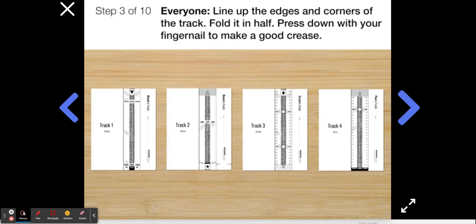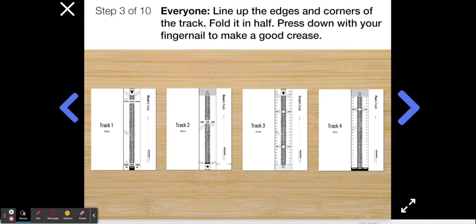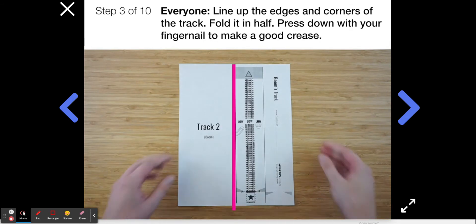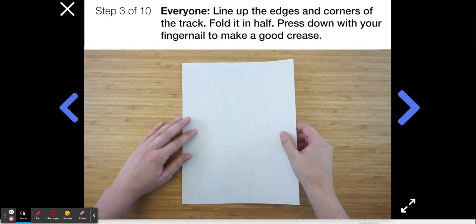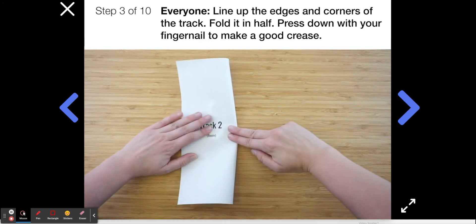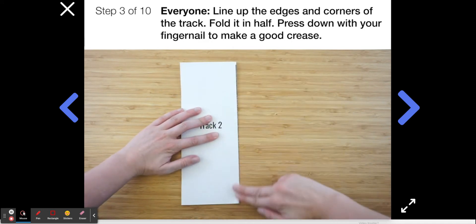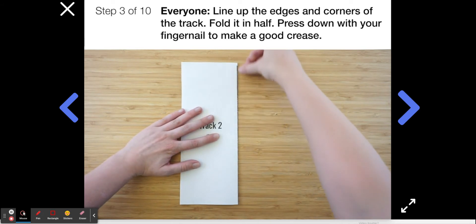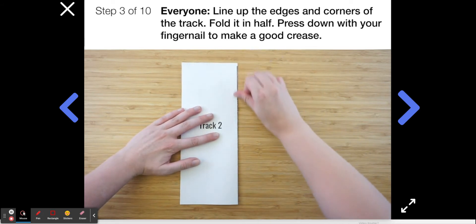Okay, to get started each person needs to fold their section of the bumper coaster. Even though everyone's tracks look really different, they all have a line running right down the center of the paper. What we're going to do is line up the edges and the corners of each paper and fold down the center of that line, just like you see here. Once you do that, make a nice crease using your fingernail. Okay, go ahead and do this now.